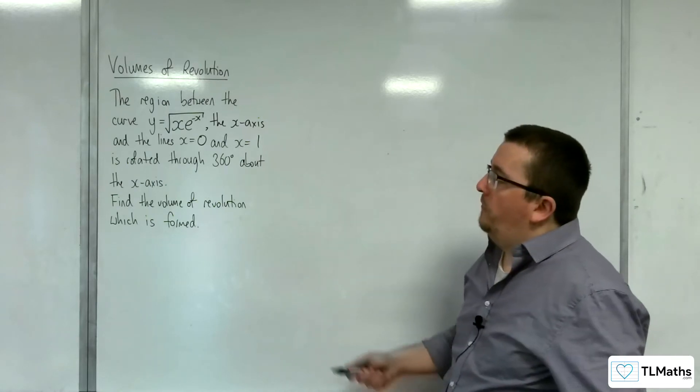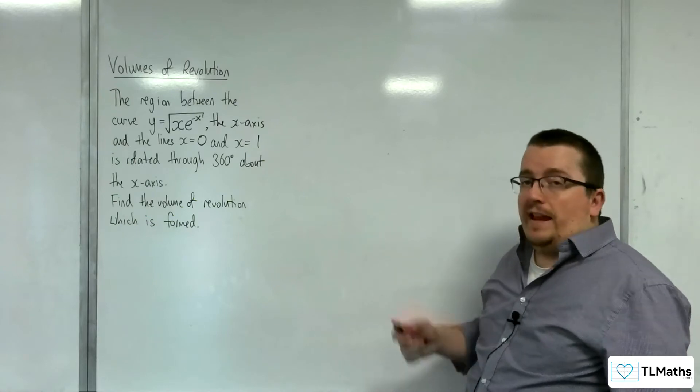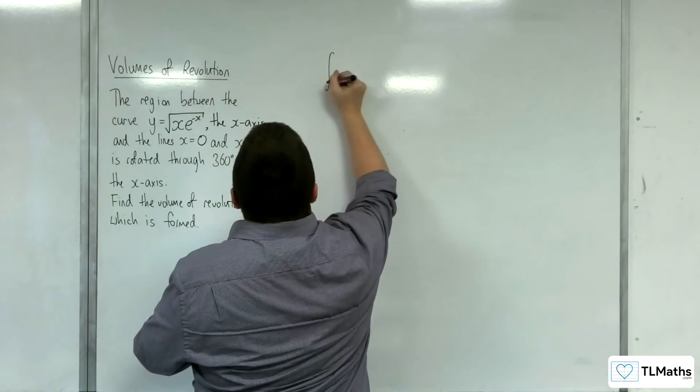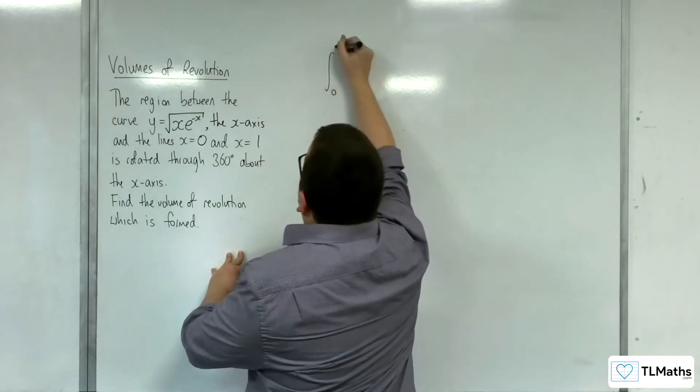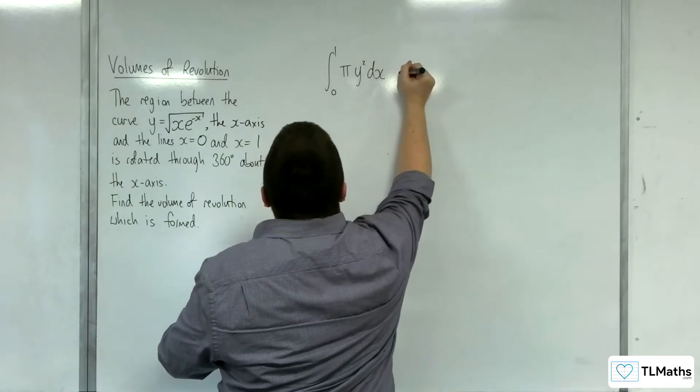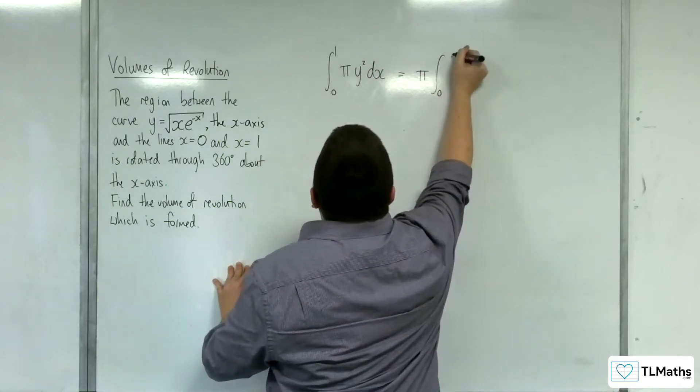Because we're revolving around the x-axis, we're going to have the integral of pi y squared dx. So the integral between 0 and 1 of pi y squared dx. I'm going to bring the pi outside of the integral.